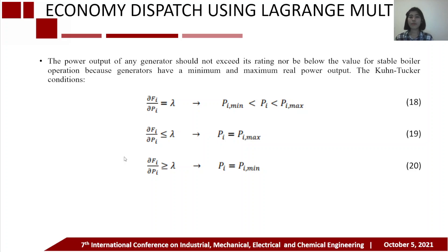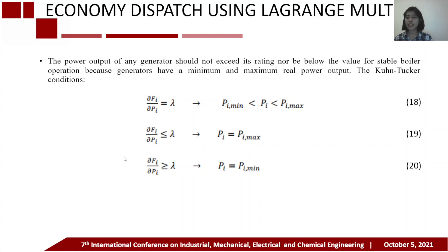The power output of any generator should not exceed its rating, nor be below the value for stable boiler operation, because each unit has a minimum and maximum real power output. The Kuhn-Tucker conditions are expressed in equations 18 through 20.